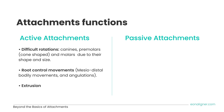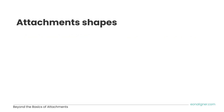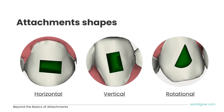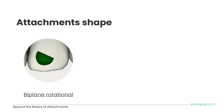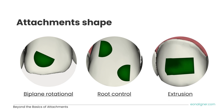Passive attachments are used for retention. Examples include expansion or retraction movements and cases of short clinical crowns. If we are attempting to move or retract the whole anterior segment, the posterior part of the aligner will lose its grip — hence, retention attachments are used. Now let's talk about the different attachment shapes used by EON. The photos here show horizontal, vertical, and rotational attachments, as well as the biplane rotational, root control, and extrusion attachments.